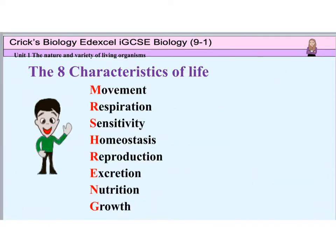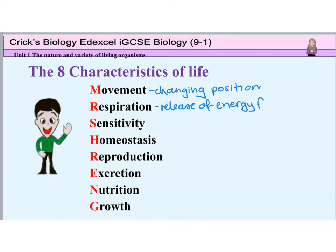First of all we will look at the 8 characteristics of life. I teach my students to remember this as Mr Schreng. M is for movement, which is changing position. You cannot say moving from place to place as you would be using the same part of the word move to give the definition of movement. The first R is for respiration, which is the release of energy as ATP from food, usually glucose. Please do not say making energy, as energy cannot be created or destroyed — it can just be changed from one form to another. This energy is released through a series of chemical or metabolic reactions going on inside your cells.